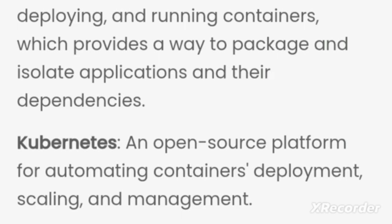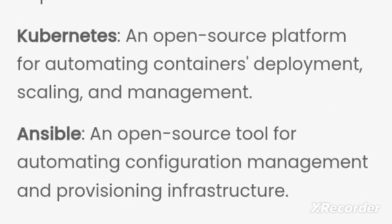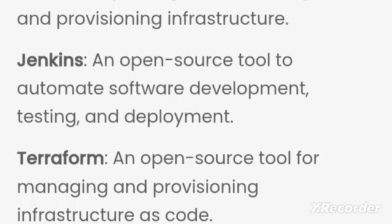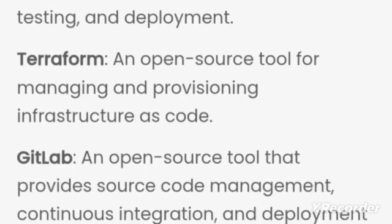Docker is basically used for creating, deploying and running containers, which provides a way to package and isolate applications. Then we have Kubernetes for automating the deployment. We have Jenkins to automate all the software deployment, testing, and everything. Terraform helps in managing and provisioning infrastructure as code. And GitLab allows all the source code management.